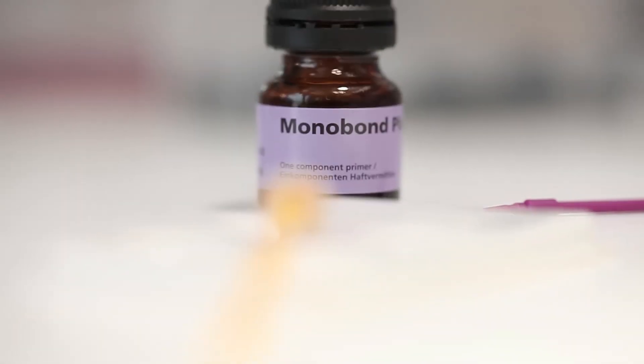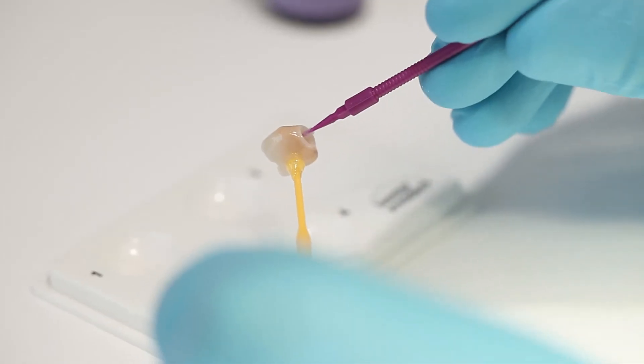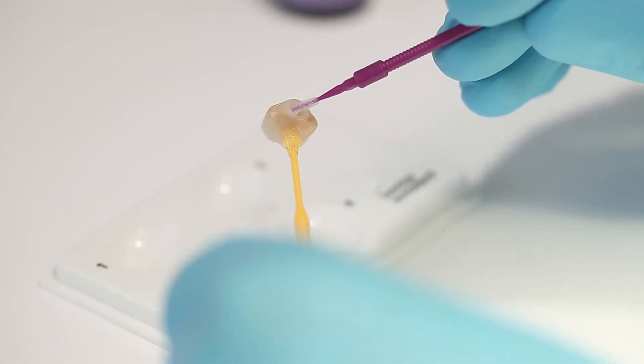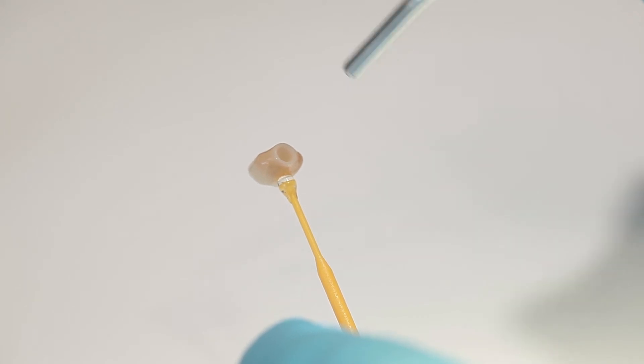Apply monobond plus to the dried bonding surface and allow to react for 60 seconds. Then evaporate any remaining excess with air that is free of water and oil.